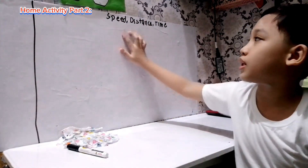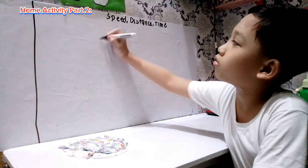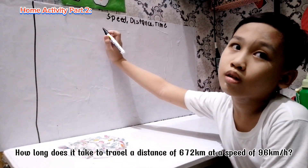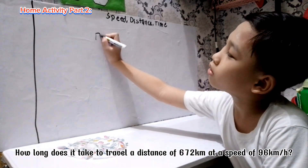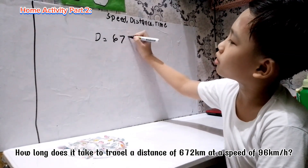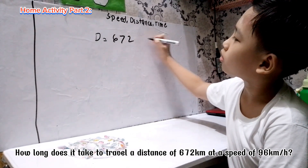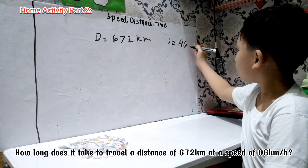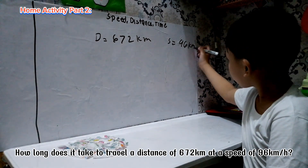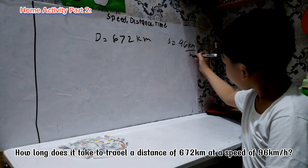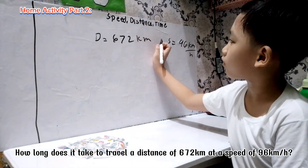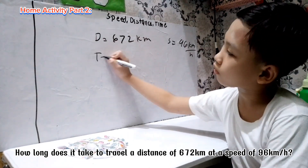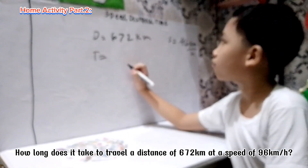This is Part 2 of Speed, Distance, and Time. How long does it take to travel a distance of 672 km at a speed of 96 km per hour?